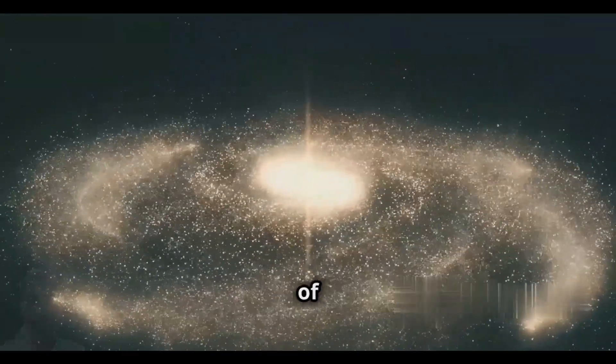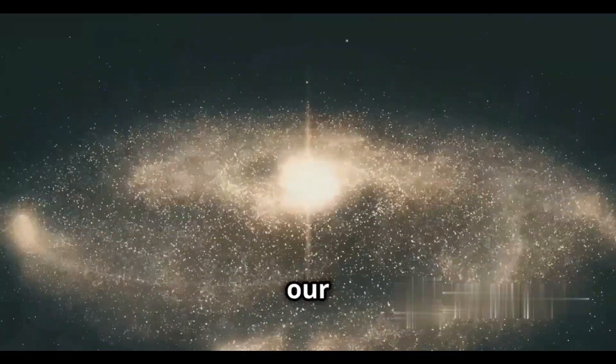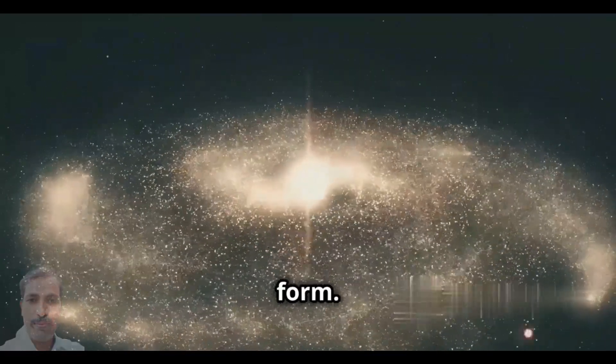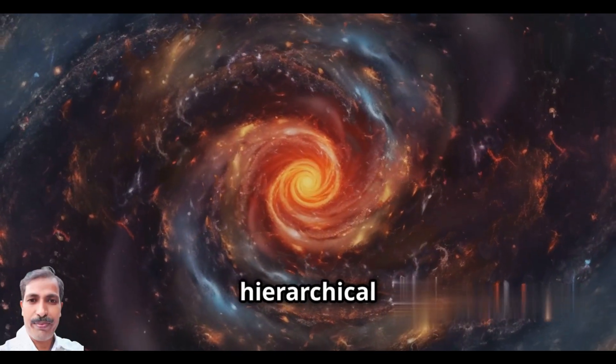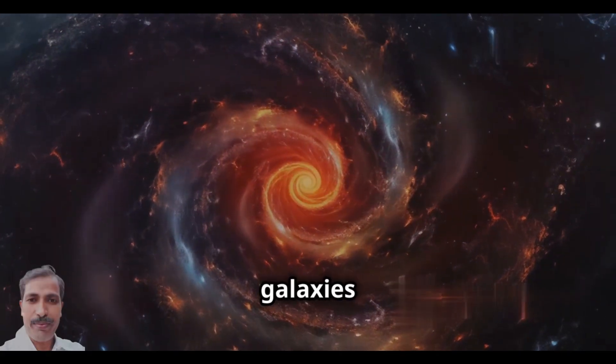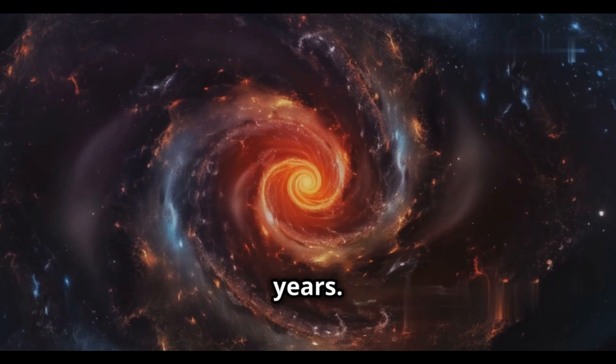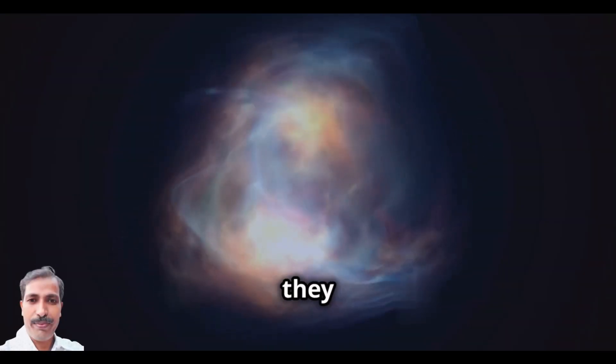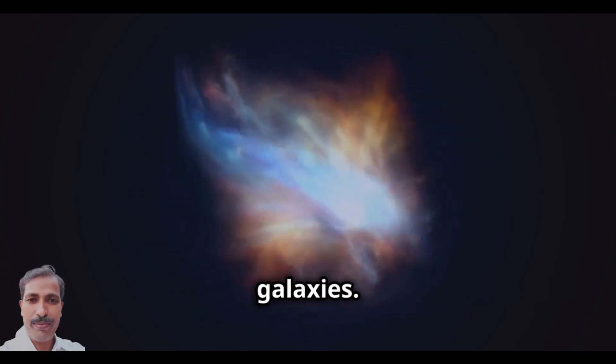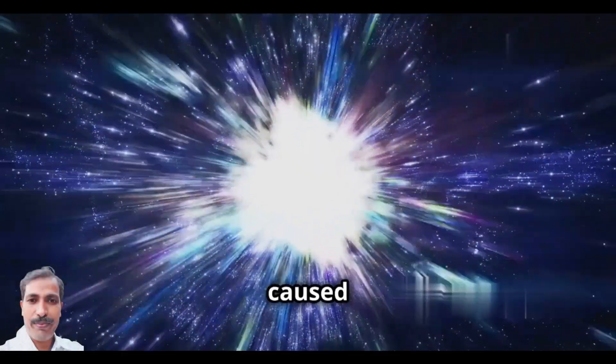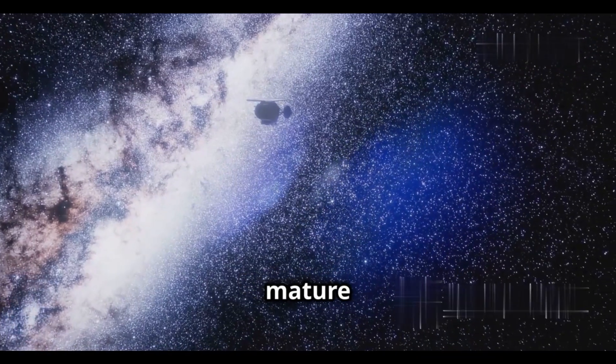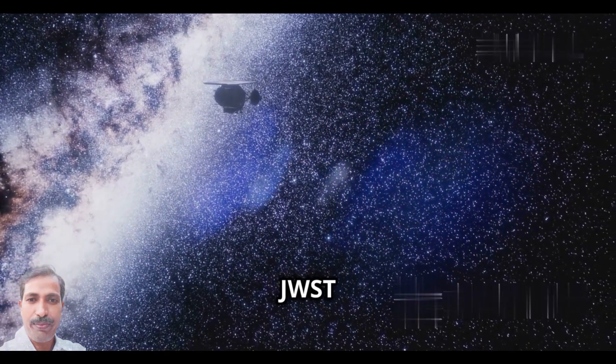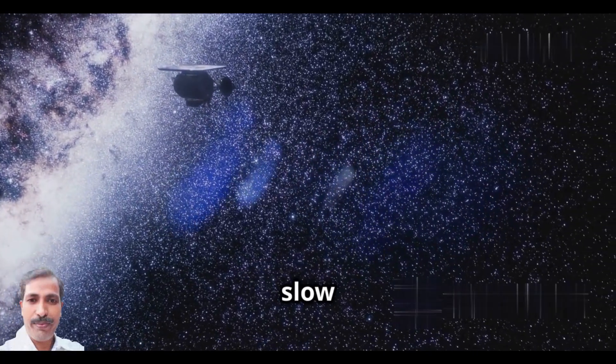The discovery of mature galaxies in the early universe really messed up our theories about how galaxies form. The main model, called hierarchical formation, says that galaxies grow slowly over billions of years. This model says that small galaxies form first, then they crash and join together over time to create larger galaxies. This process is thought to be caused by gravity, the invisible force that pulls things together. But the mature galaxies seen by JWST seem to have skipped this slow process.